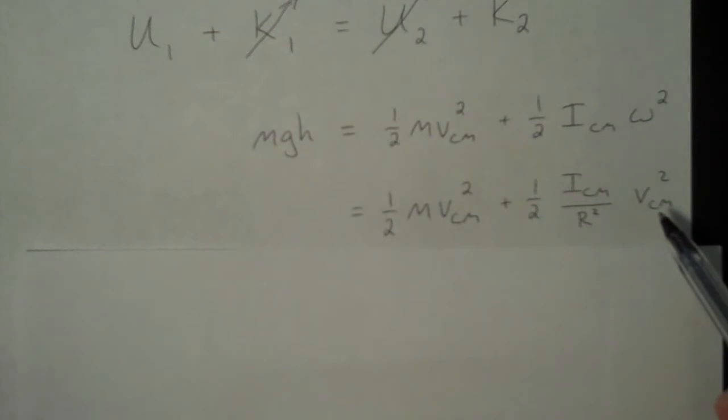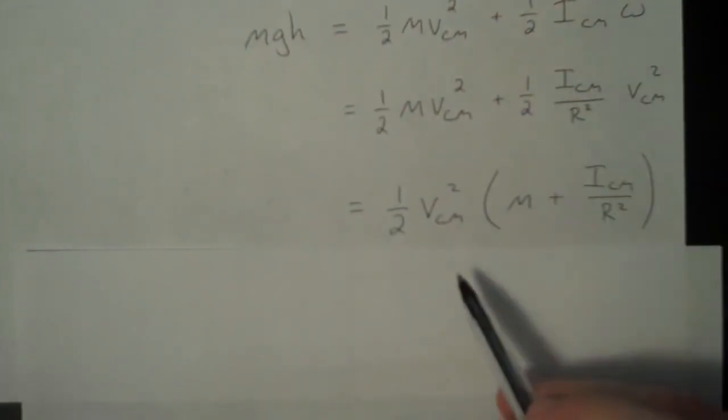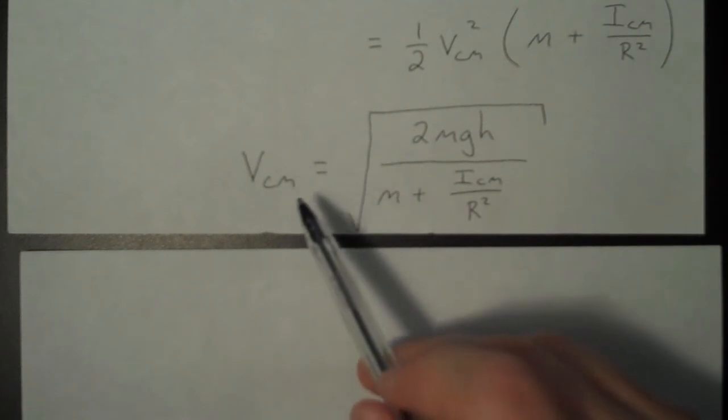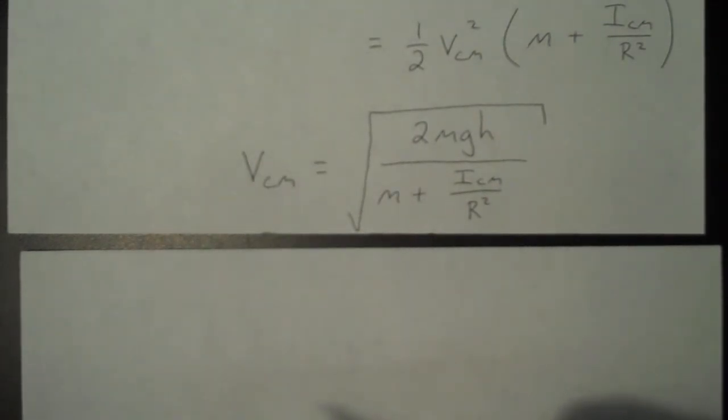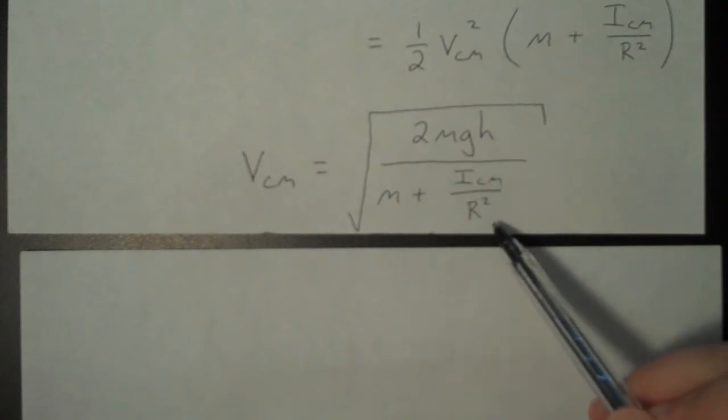Why did I rewrite omega in terms of v? Well, what I want to know is which of these cylinders is reaching the bottom faster. And so I'm really worried about v and not omega. Notice both of these terms now have a vcm. So I can factor that out. And I can write the expression solving for vcm.